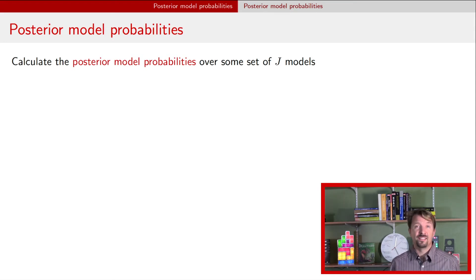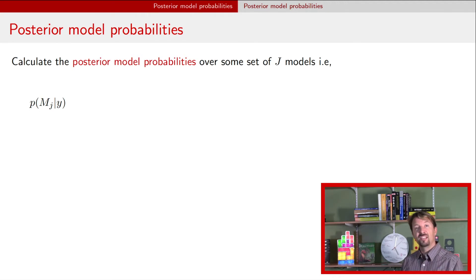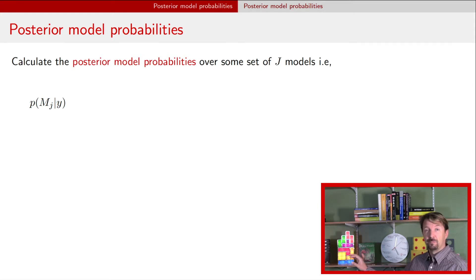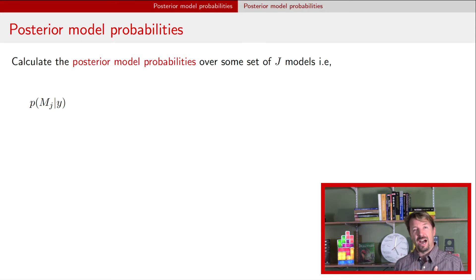What we're going to do as a Bayesian is calculate something called a posterior model probability. The posterior model probability is just this: as a Bayesian, we calculate the distribution of the things we don't know on the left side of the conditioning bar given the things we know on the right side. In this case, what we know is the observed data, and what we don't know is which models are true. This PMJ is the probability for model J given the data — a statement about our belief about that model being true. Because of that, all posterior model probabilities must sum to one.